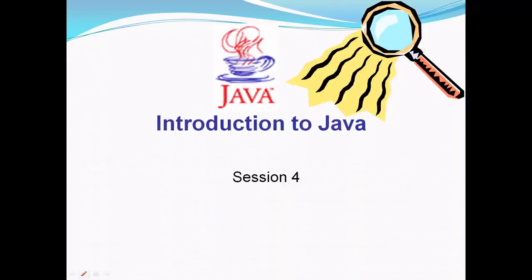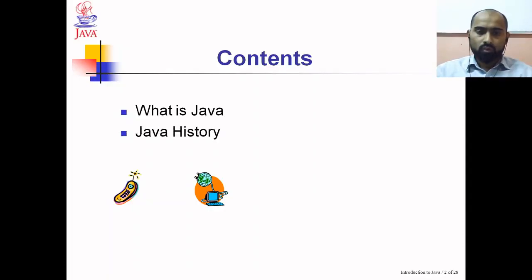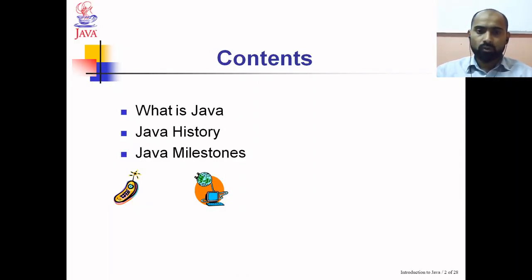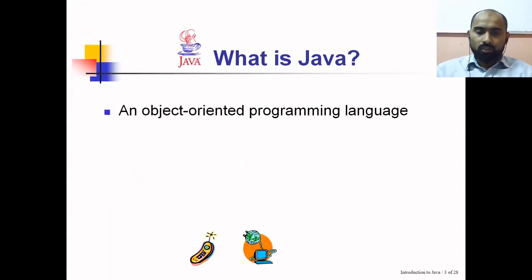The contents of today's session: we will discuss what is Java, Java history, and Java milestones. Let's start with the first topic — what is Java. Java is an object-oriented programming language, meaning it is based on the principles of object-oriented programming.